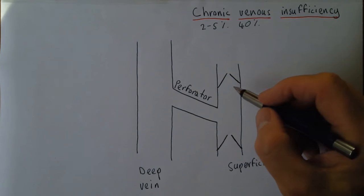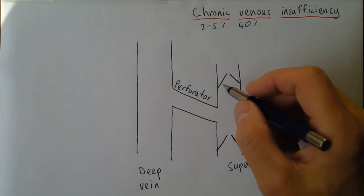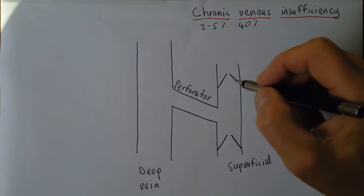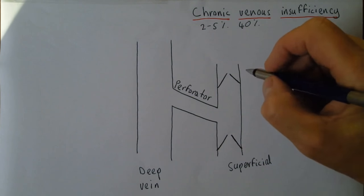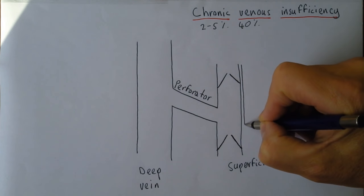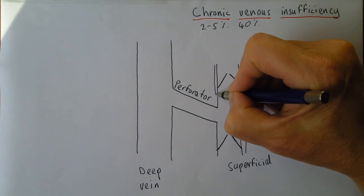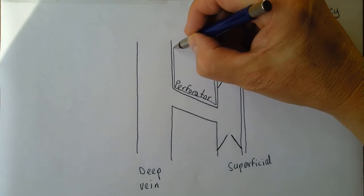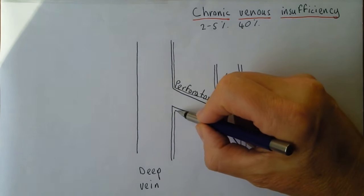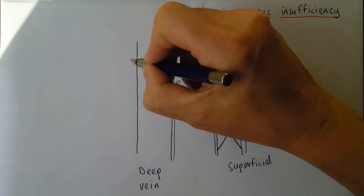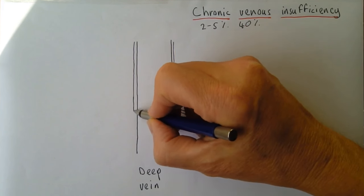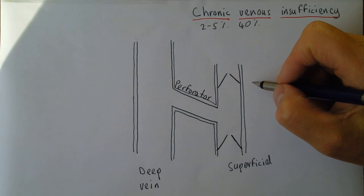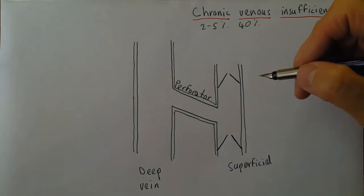These valves aren't that substantial — they're just infoldings of the inner lining of the blood vessel, the tunica interna — so they're fairly thin folds. The vein walls themselves are a bit thicker, composed of the tunica media and the tunica externa. The walls aren't as thick as arteries but they are reasonably substantial — that's what you've got to stick your needle through when you're doing venipuncture.